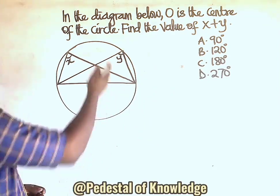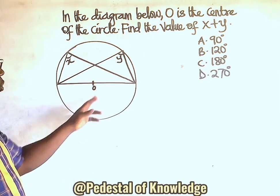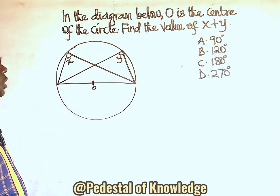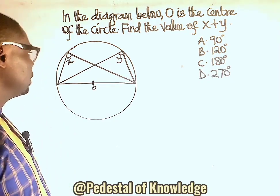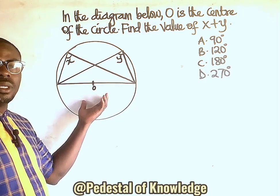Now, this is a circle and it says that O is the center of the circle. And we know that one of the theorems in circles says that the angle in a semicircle is a right angle.